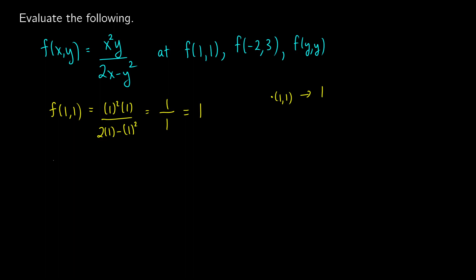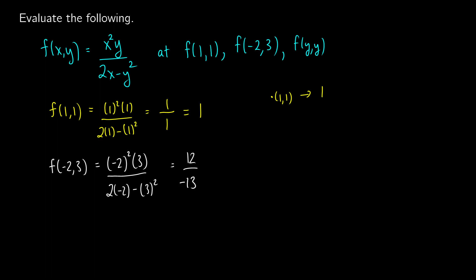Now what if we try f of negative 2 and 3? We put negative 2 in for x and 3 in for y. So we get negative 2 squared times 3, divided by 2 times negative 2 minus 3 squared. On the top, that gives us 4 times 3, which is 12. On the bottom, we get negative 4 minus 9, which is negative 13. So the result is negative 12 over 13.